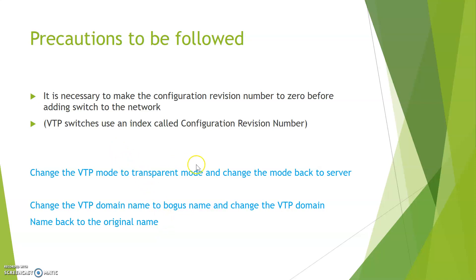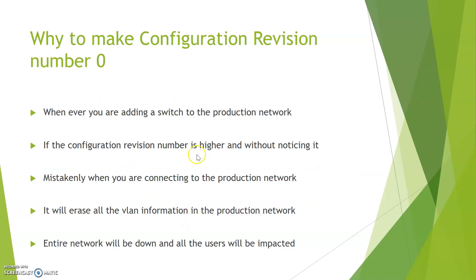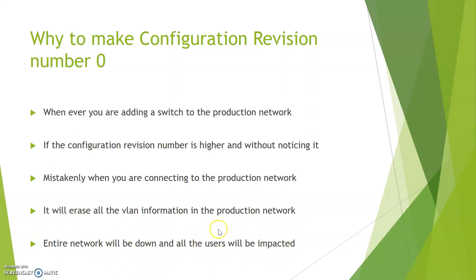What will happen if the configuration revision number is higher? If we mistakenly connect that switch to the production network, it will erase all the VLAN information in the production network. The entire network will go down and all users will be impacted.